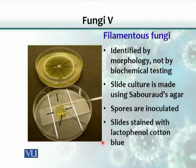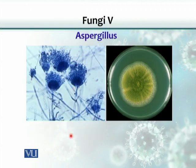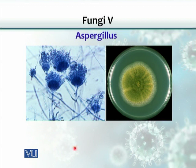To facilitate visualization of the spores and their arrangements, we use a specific dye called Lactophenol Cotton Blue. Just as we use Gram staining for bacterial identification, here we use Lactophenol Cotton Blue for fungi. It is a blue dye, and you can see the hyphae along with their spores stained slightly blue in color.